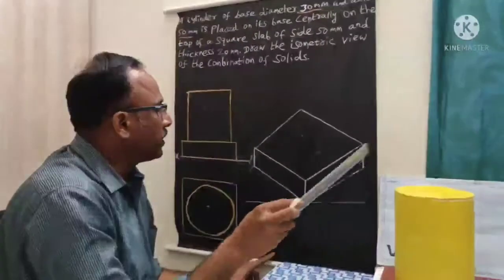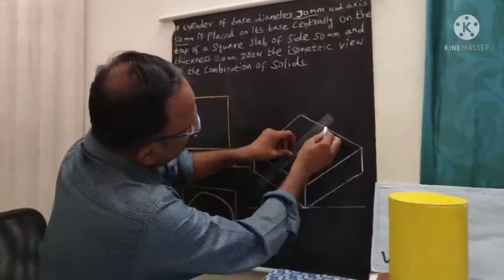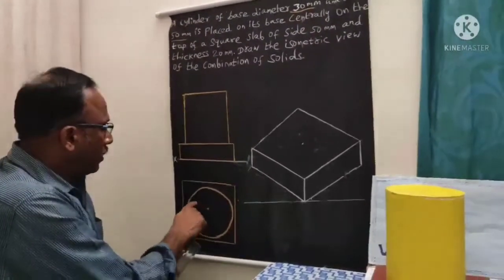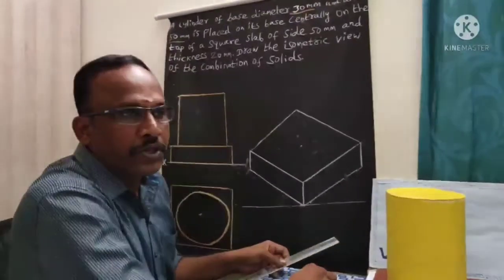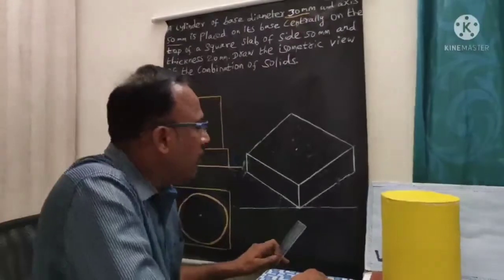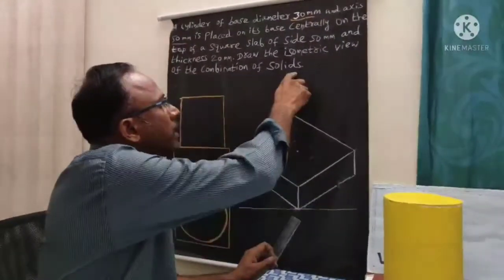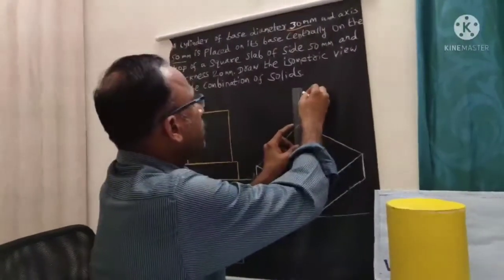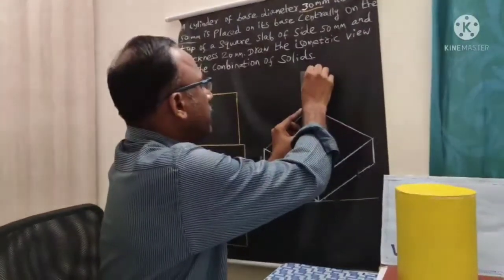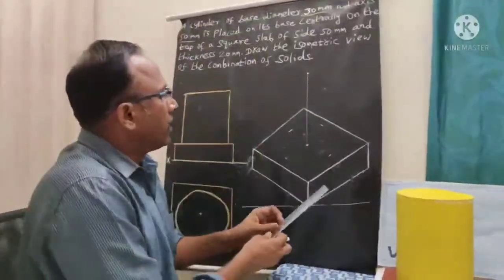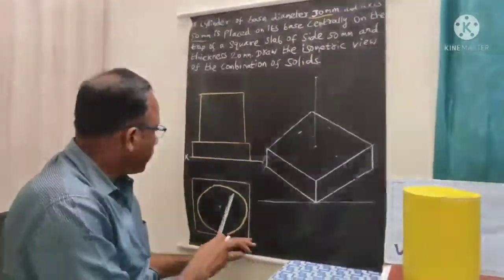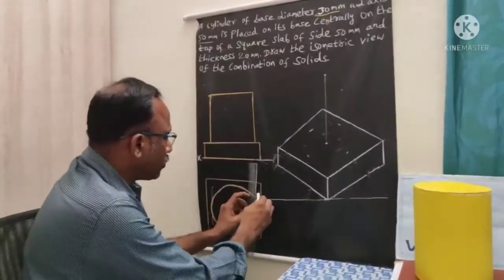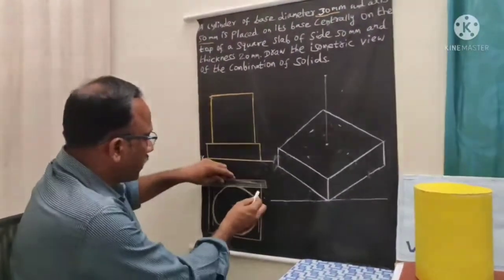Now we are going to draw the top cylinder. For which I need to mark the center point. We have the cylinder, so we have two ellipses to draw. For drawing the circle, the circle will be seen as an ellipse. The bottom of this cylinder portion will be enclosed by one square — the circle is enclosed by one square. I am going to redraw this square with four points.